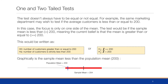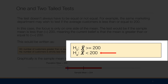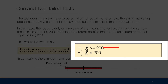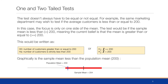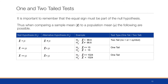The same marketing department may wish to test if the average number of customers is less than or equal to 200. In this case, our focus is only on one side of the mean. The test would be whether the sample mean is less than 200, meaning the current belief is that the mean is greater than or equal to 200. So the null hypothesis is: x̄ ≥ 200, and the alternative hypothesis is: x̄ < 200.